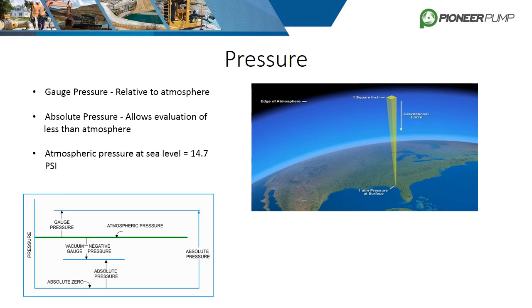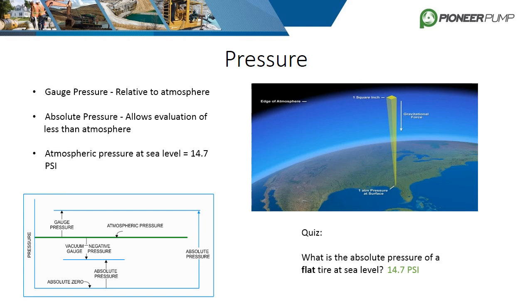Where does 14.7 psi come from? The air in our atmosphere has mass. If we take one square inch of that mass from the Earth's surface to the edge of the atmosphere and apply Earth's gravitational force to it, we get 14.7 psi. Now it's time for a quiz: what is the absolute pressure of a flat tire at sea level? The answer is 14.7 psi. Tires are inflated at around 30 to 40 psi gauge, so zero gauge equals atmospheric pressure. If you answered zero psi, remember that the question asks for absolute pressure, not gauge pressure.